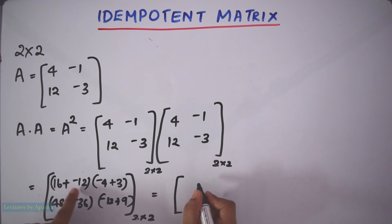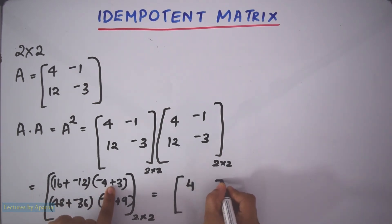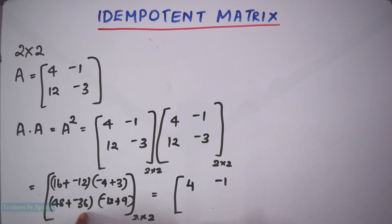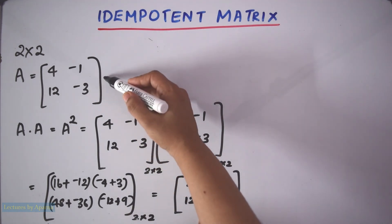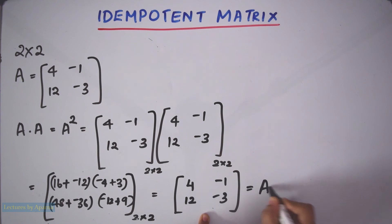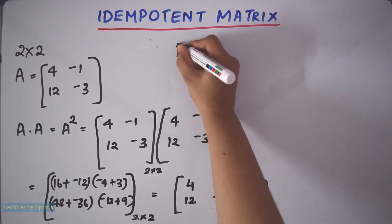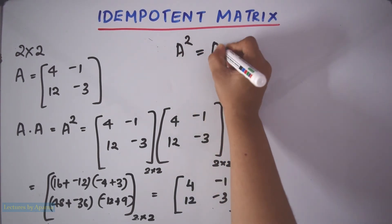So you get 16 minus 12 is 4. Minus 4 plus 3 is minus 1. 48 minus 36 is 12. Minus 12 plus 9 is minus 3. See, this matrix is the same as this matrix A. That is, you got A square is equal to A.